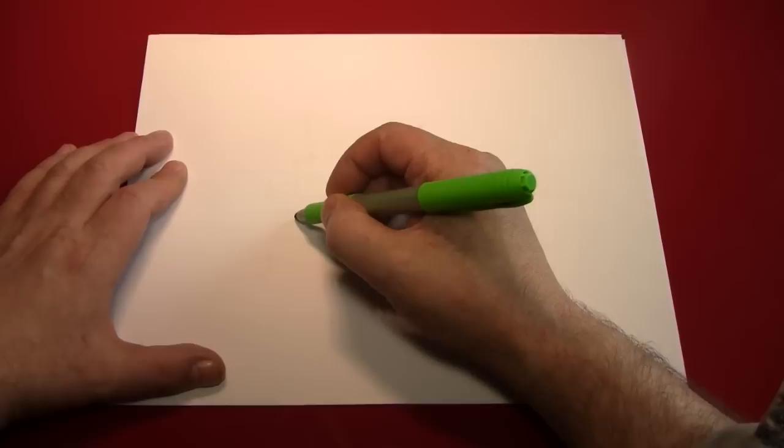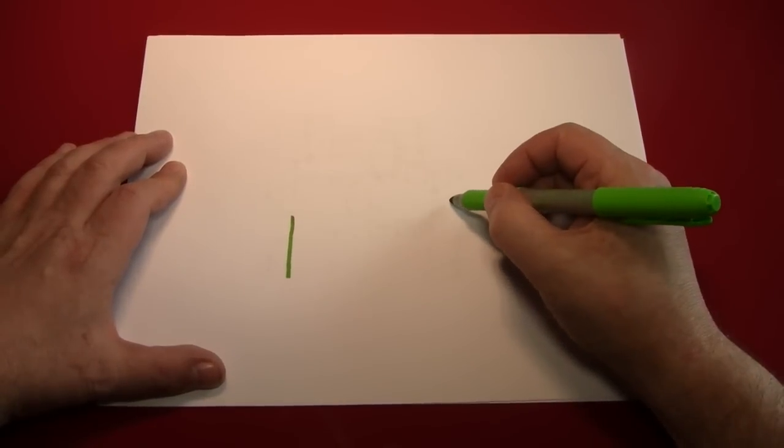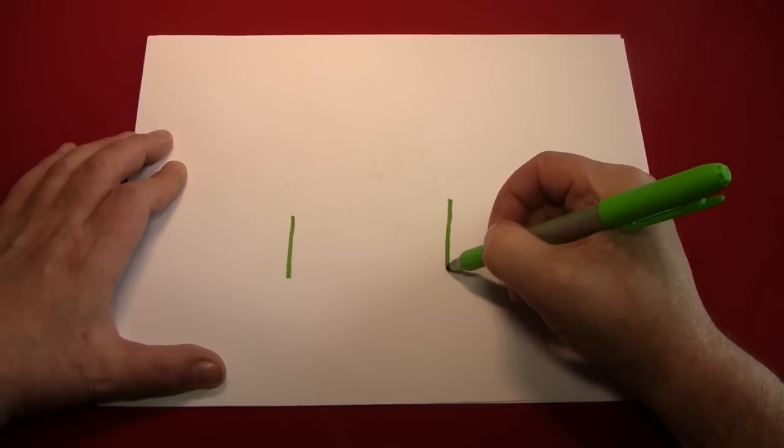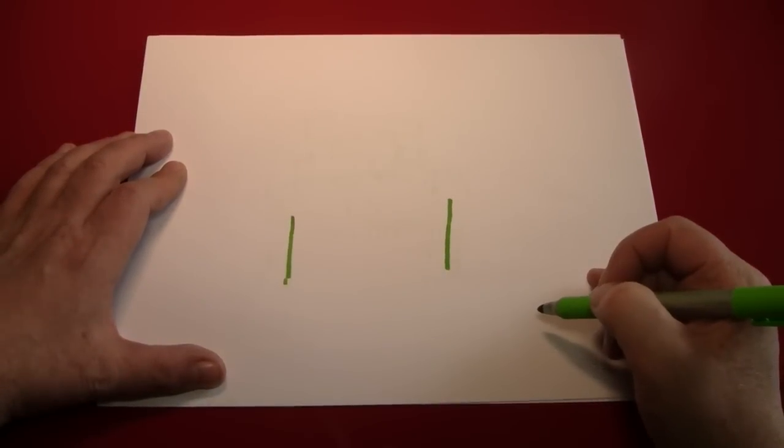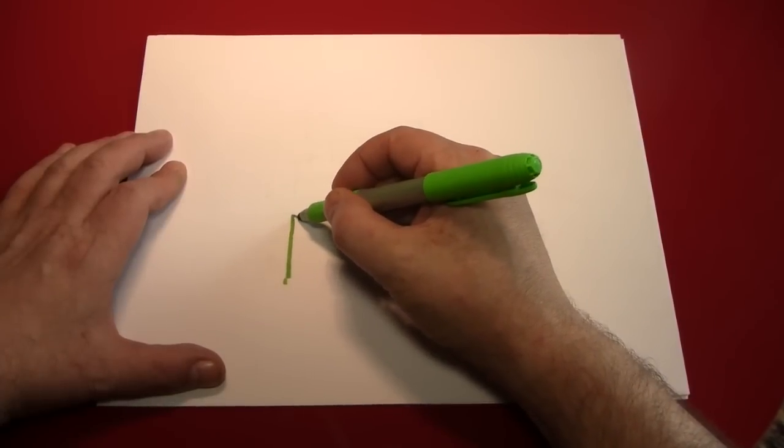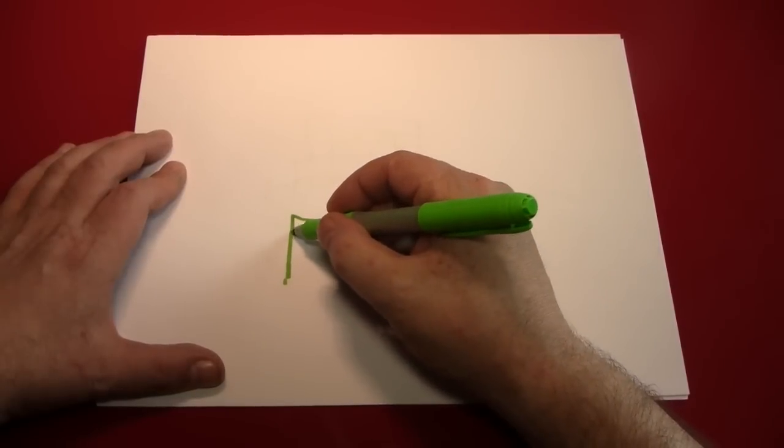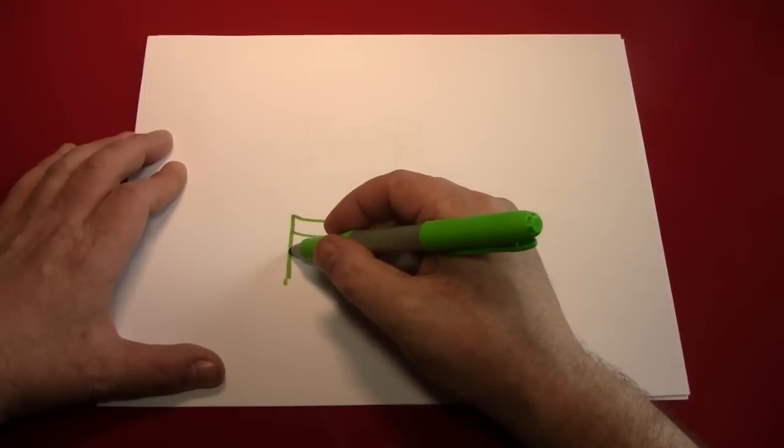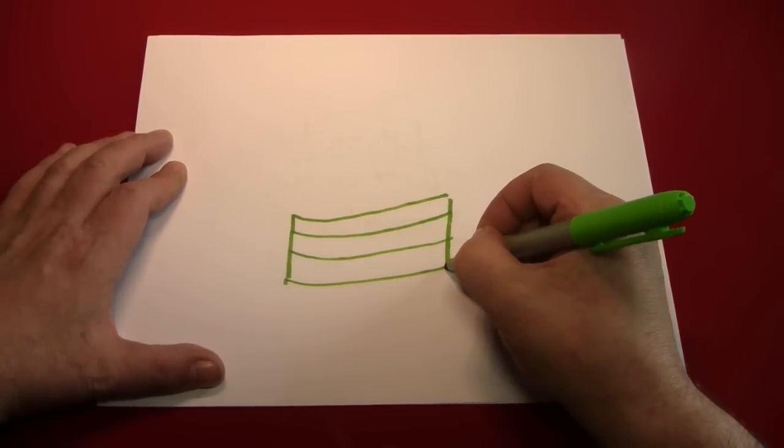I like to start drawing a wishing well by drawing the sides of the well itself. All I've done is just drawn two vertical lines that are up and down and then I'm going to connect them with a bunch of lines that are kind of curved. And what I'm doing here is I'm creating the rows for the stones that this wishing well is made from.